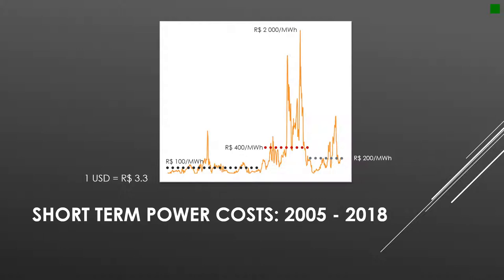Short-term power costs since 2005 are shown in this graph. This is equivalent to the marginal cost of operations as published by the independent system operator here in Brazil. This cost is basically the one associated with dispatching one additional megawatt-hour using the existing infrastructure — by that I mean generation, transmission and distribution of electric power.